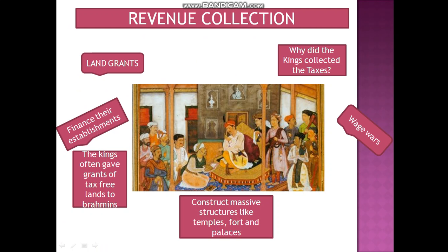Revenue was collected through taxes for several purposes: to fund land grants, to finance their establishments, and to wage wars — for which they needed arms. The king often gave grants of tax-free lands to Brahmins. This is why they collected taxes and allocated spending on these things — also to construct massive structures.